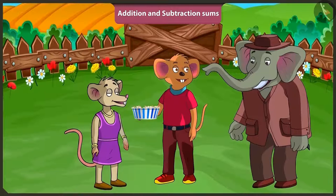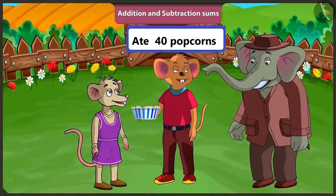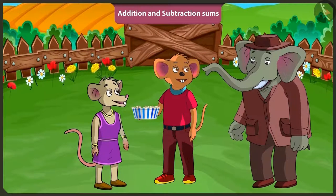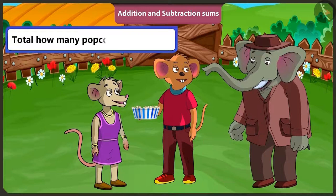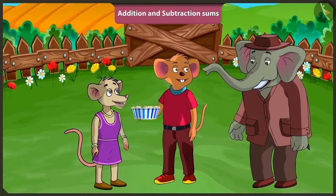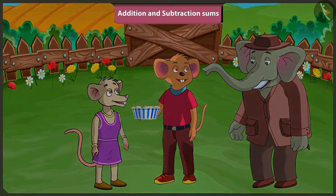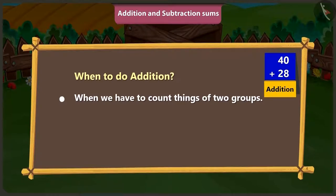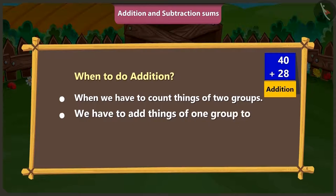Choo Choo, how many popcorns did you eat in one minute? I ate 40 popcorns in one minute. And Chichi, you? I ate 28 popcorns. If I ask: total how many popcorns did Choo Choo and Chichi eat, then to know that we will have to do the addition of 40 and 28. But how would we know that we have to do addition? Listen carefully: when we have to count things of two groups, or we have to add things of one group to the things of another group, then we have to do the addition.